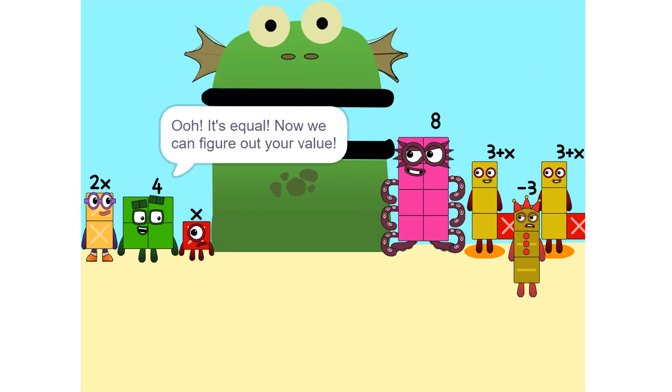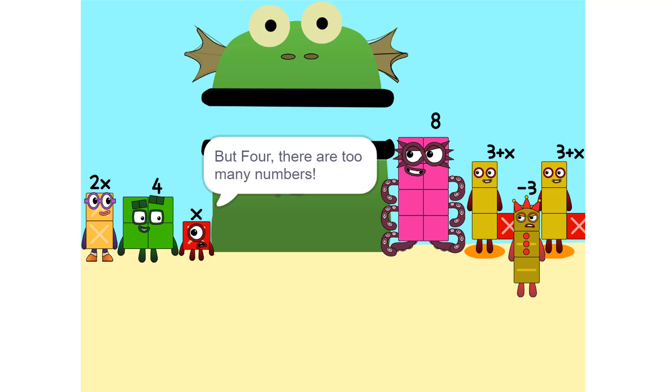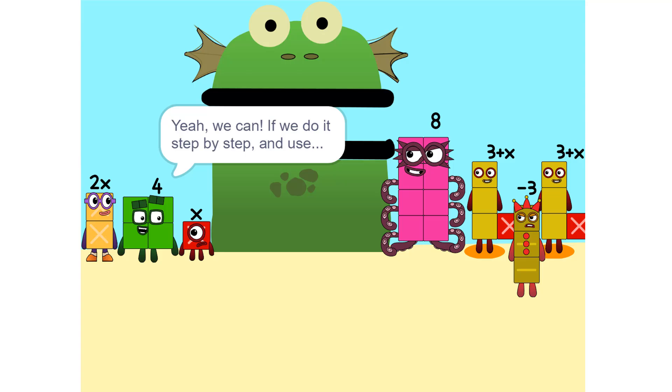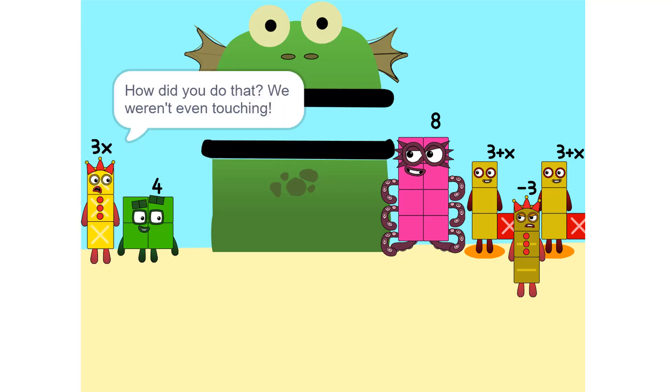Ooh, it's equal. Now we can figure out your value. But 4, there are too many numbers. We'll never figure it out. Yeah, we can. If we do it step by step and use a pencil. So let's get started. One thing we can do is add these two together.